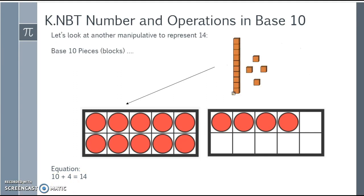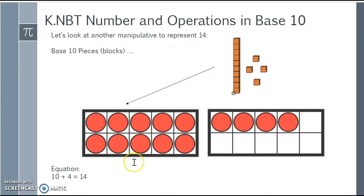Another way to look at it is our base 10 pieces or block pieces. If I stack 10 units on top of each other and snap them together, that would be one group of 10. Adding four single units represents four pieces in our 10 frame. And then I can make my equation: 10 plus 4 is 14. The equation stays the same.